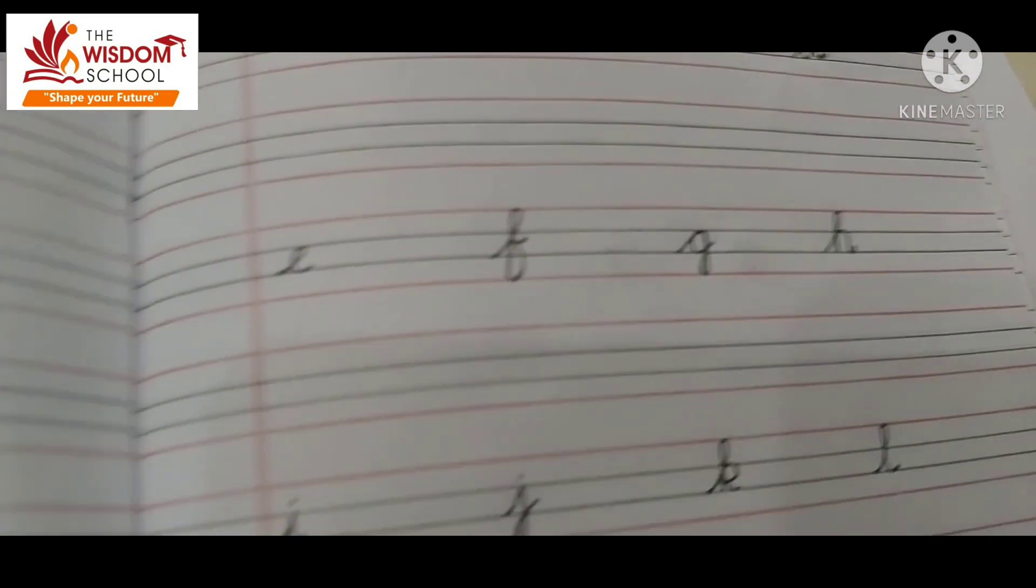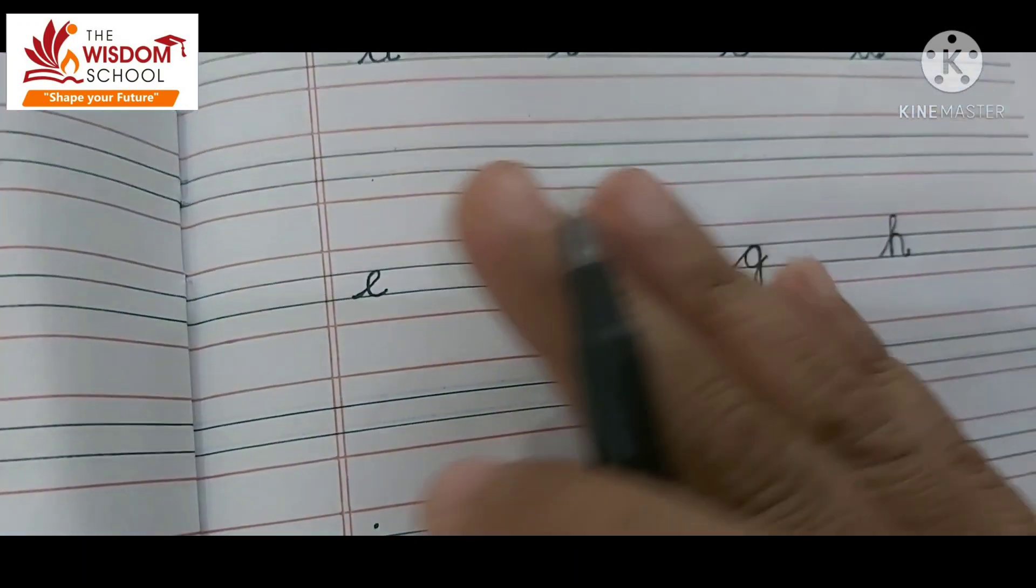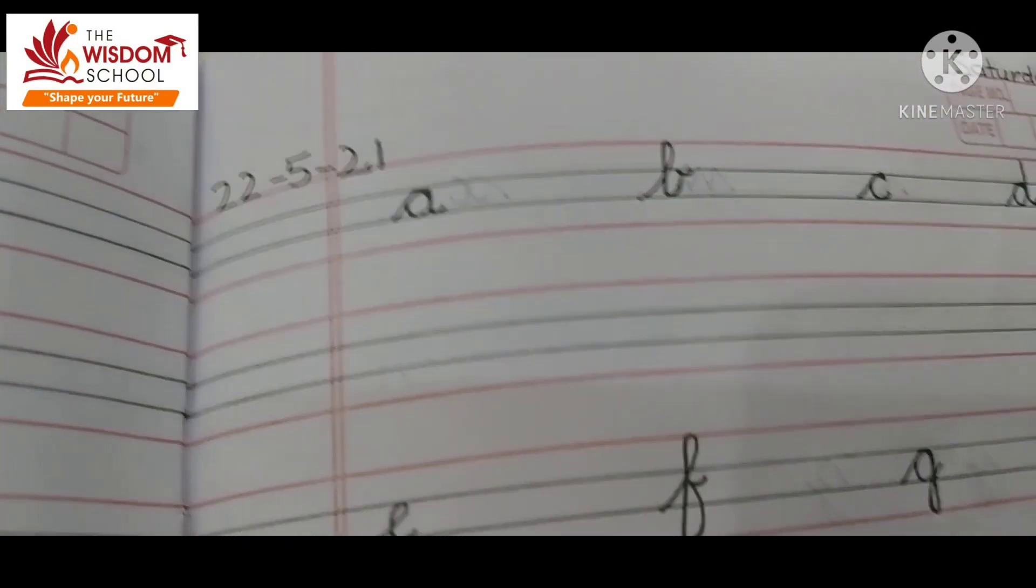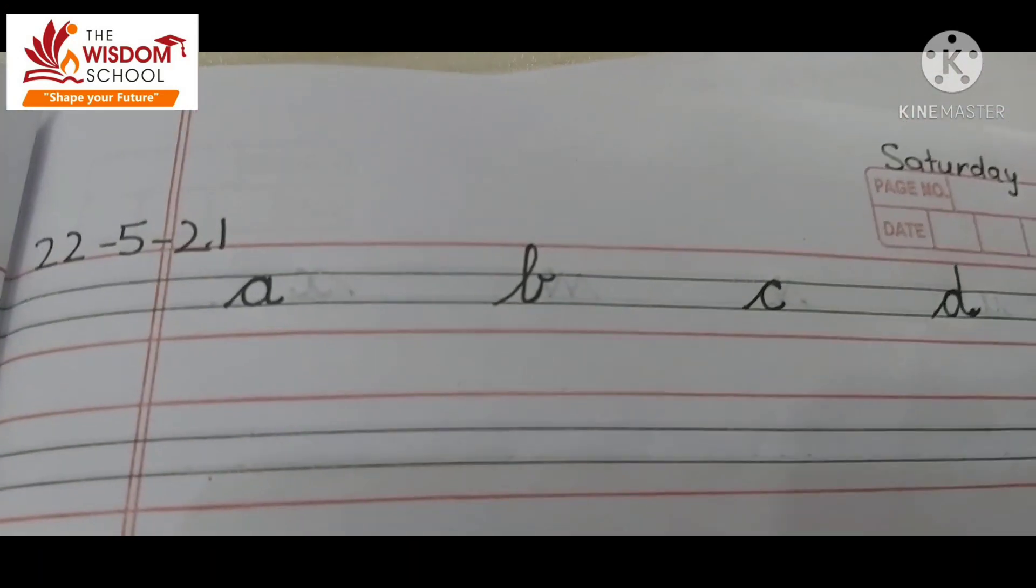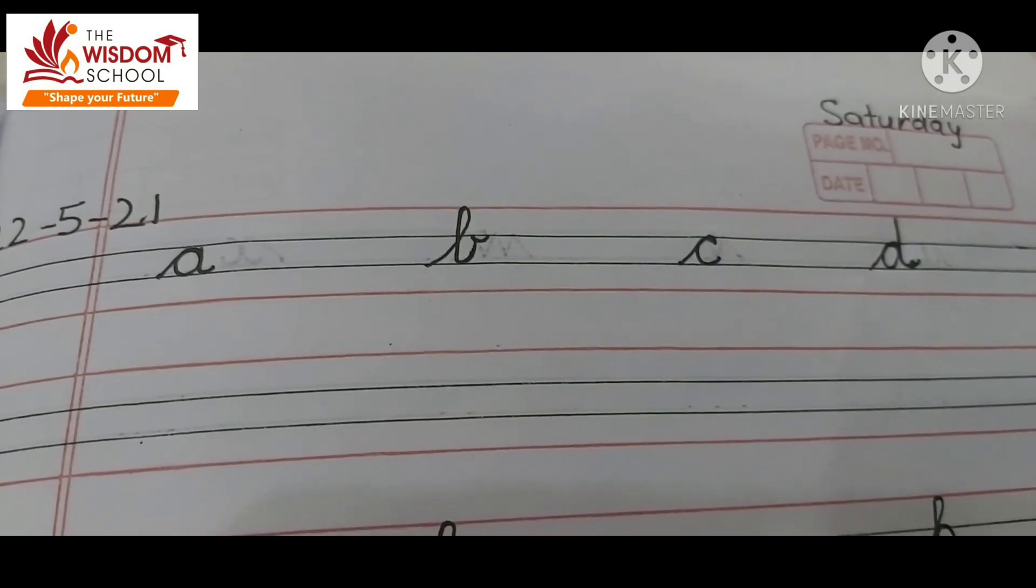We will write this beautiful writing. You will put dots here, then you will try to write without dots. If it doesn't happen, it's okay, no problem. You will start with dots.